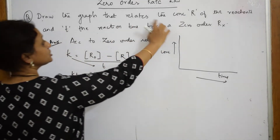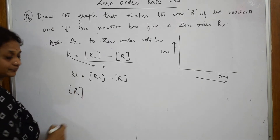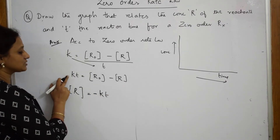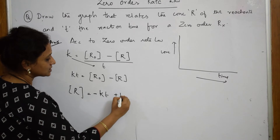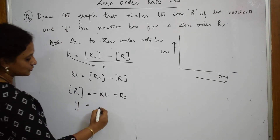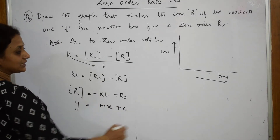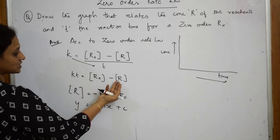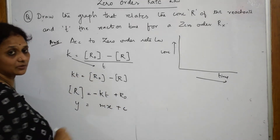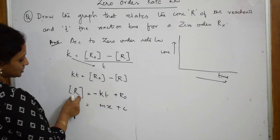Cross-multiplying gives KT = R₀ − R. Now I have to find the concentration of the reactant, so I rearrange: R = −KT + R₀. This follows the form Y = MX + C, which is a straight line graph. Since they asked me for the concentration of the reactant, I took R out, and when KT comes to the other side I get minus KT plus R₀.